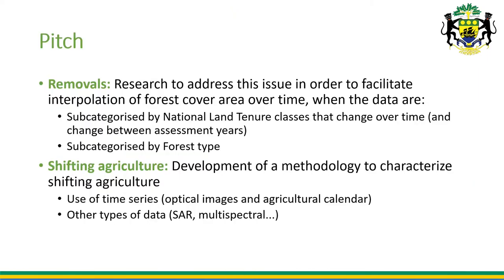Gabon's research gaps are firstly concerning removals: it would be useful to address how to measure forest cover area change over time when analyses use national land tenure classes that change in area between assessment years, further subdivided by forest type. Secondly, concerning shifting agriculture, it would be useful to develop a methodology to characterize shifting agriculture, perhaps using time-series data of optical images, agricultural calendars, or other data types such as radar or multispectral data.